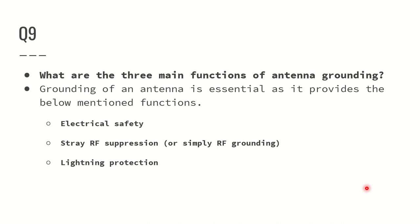What are the three main functions of antenna grounding? Grounding of an antenna is very essential. It provides electrical safety, stray RF suppression — also called RF grounding technically — and lightning protection. All these are provided by antenna grounding.